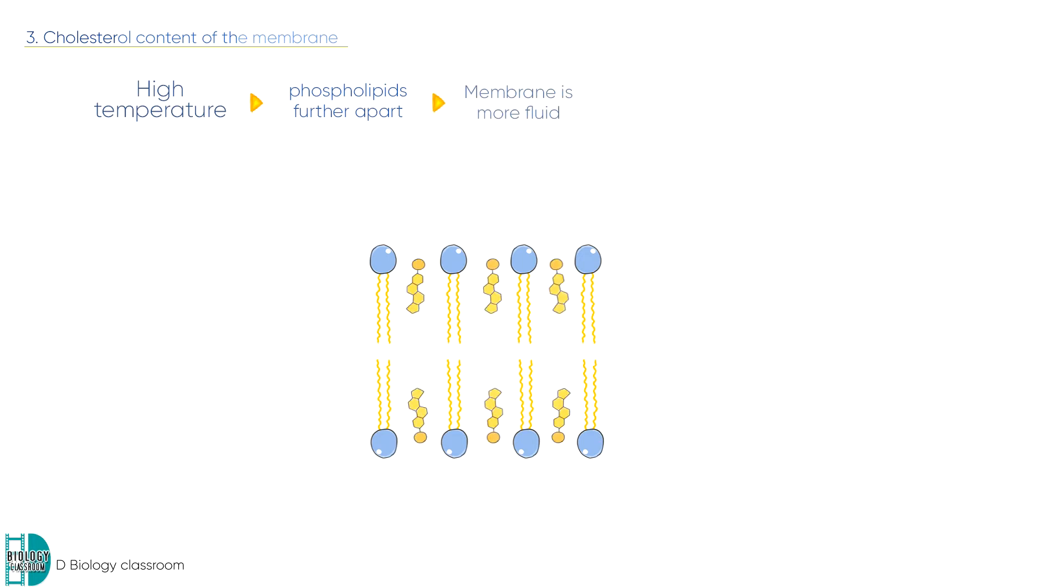At high temperatures, on the other hand, the phospholipids are further apart due to kinetic energy. This may cause the membrane to be too fluid.